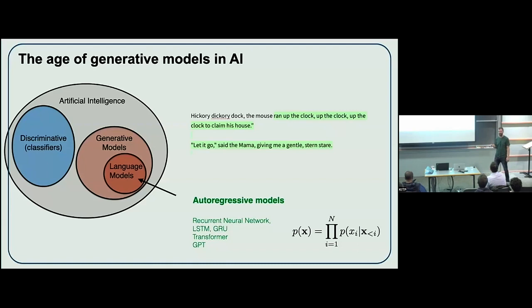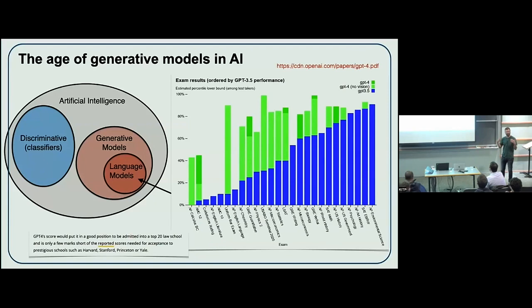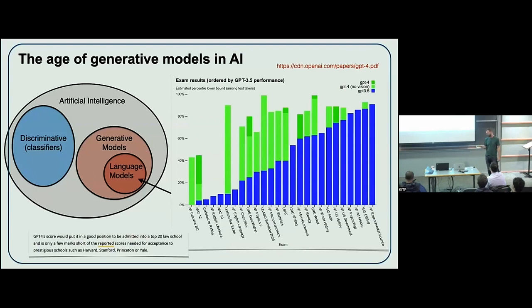This is GPT-2. Now we're up to GPT-4 and the outputs have become much more impressive. Here's a plot from the GPT-4 paper showing exam results percentiles — here's AP Physics, GPT-3 was here, GPT-4 gets up to the 80th percentile, doing better than I would have done on this test. GPT-4 scores would put it in a good position to be admitted to prestigious schools. The point is these are very sophisticated models exhibiting all sorts of emergent properties, which should cause us pause as physicists working on computational methods.